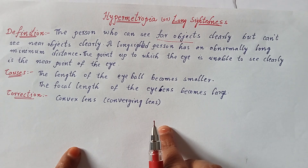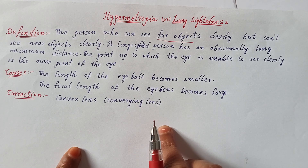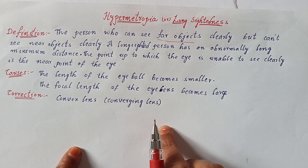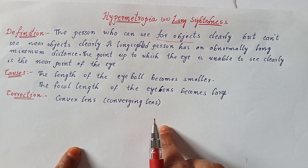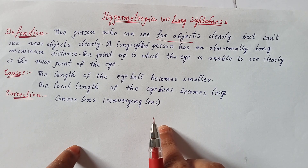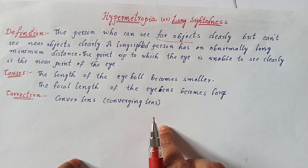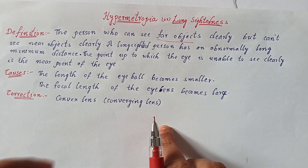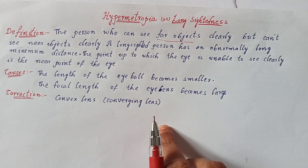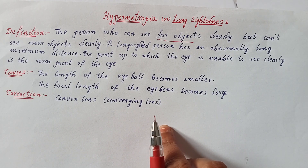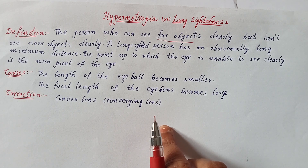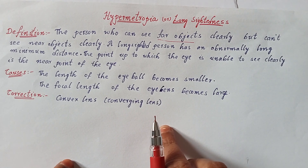The length of the eyeball becomes smaller and the focal length of the eye lens becomes large. In this case the image of the object will not form on the retina but forms behind the retina. For correction, we have to use a convex lens of suitable focal length — it changes depending upon the person. The convex lens is a converging lens, and based on this correction you find focal length or power in numericals.